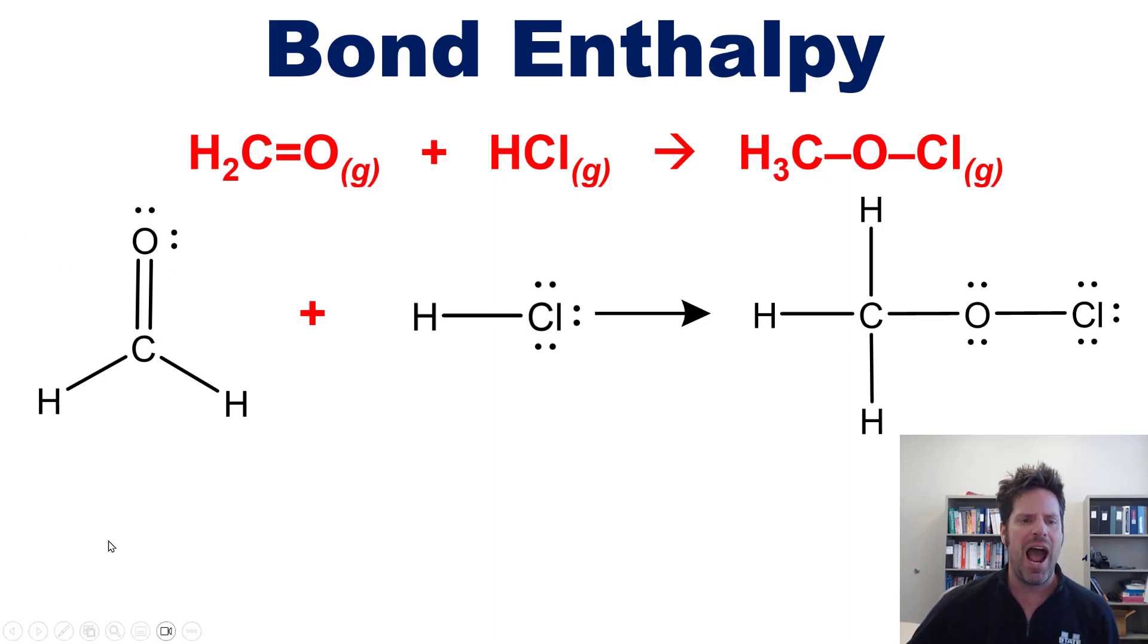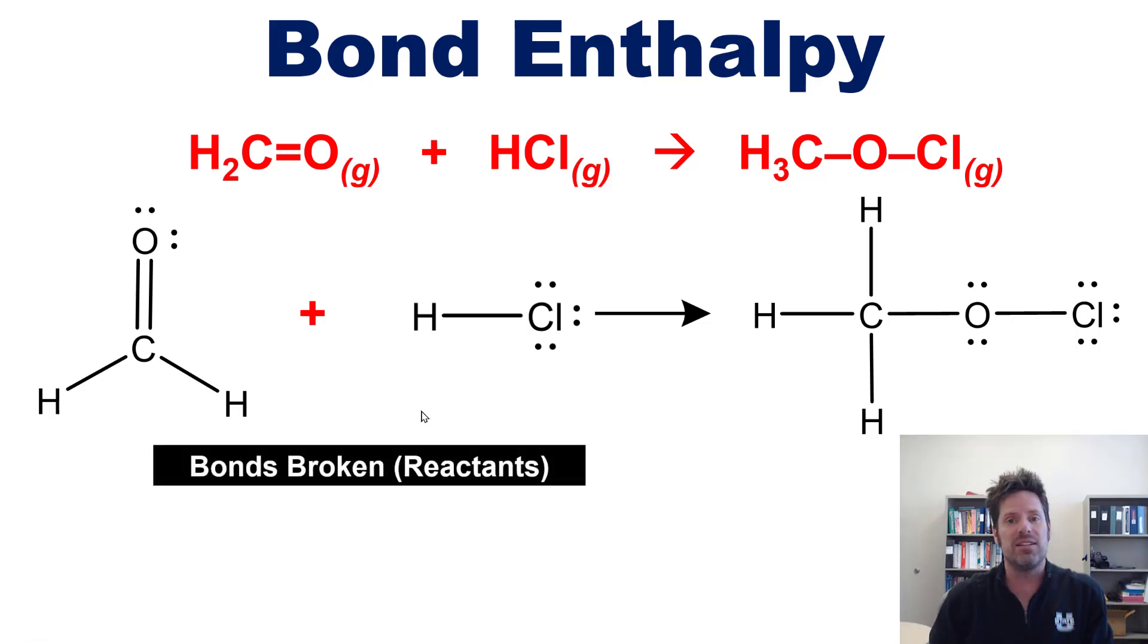So what I'm going to do is just look at how many total bonds of all different varieties there are on the left side of this reaction. That is going to be my bonds broken. That is the reactants bonds will break and then reform in a completely different way as these reactants move towards products. So what kinds of bonds do I see here?